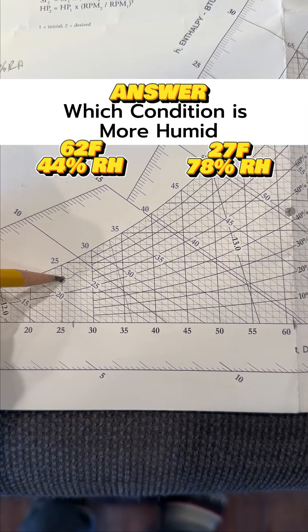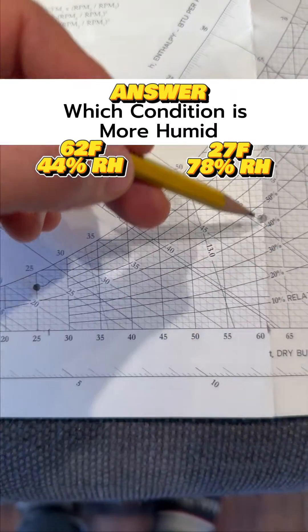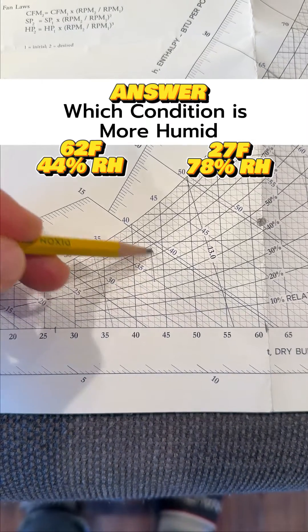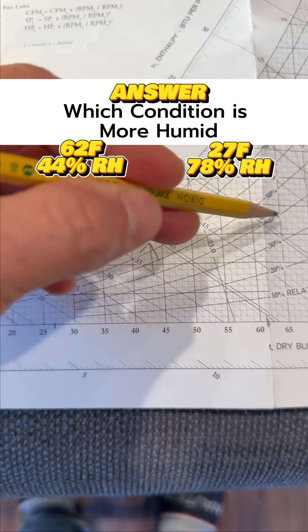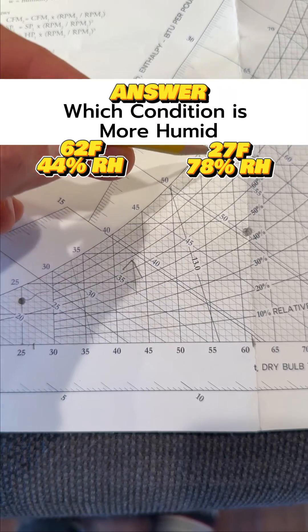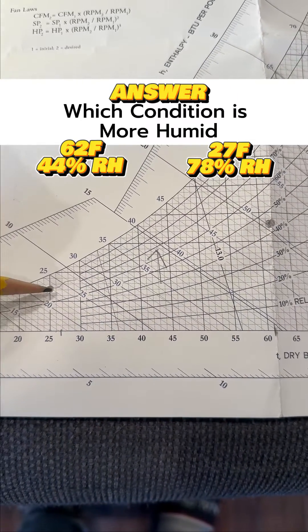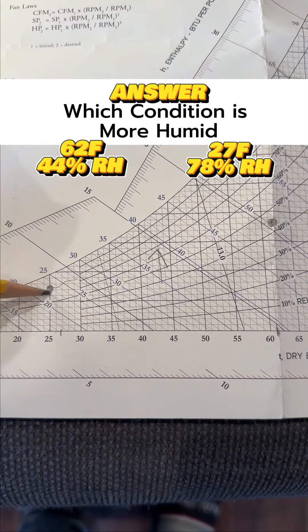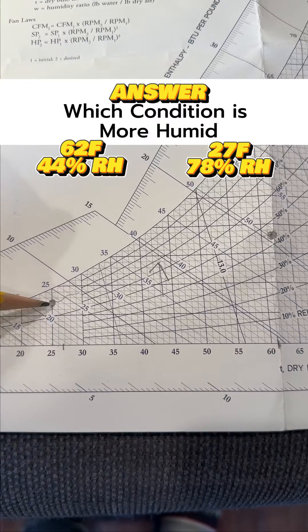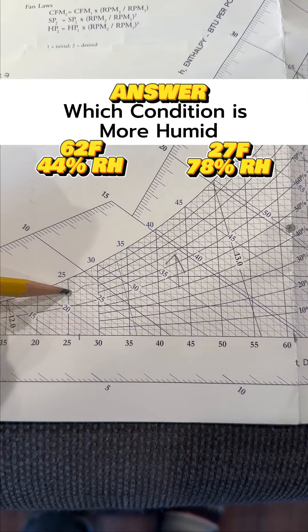Now, just for purposes of this, we know that this condition here is more humid because it's higher on the psychometric chart. And as we go up in this way, we add humidity to the air. So relative humidity is not a good indicator when you're comparing two points of which one has more humidity.